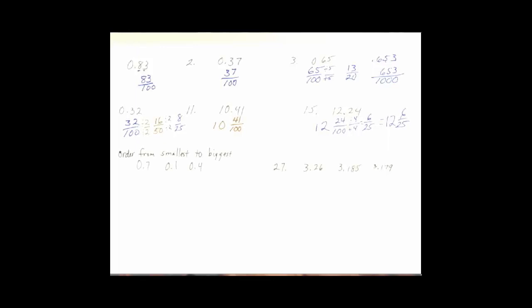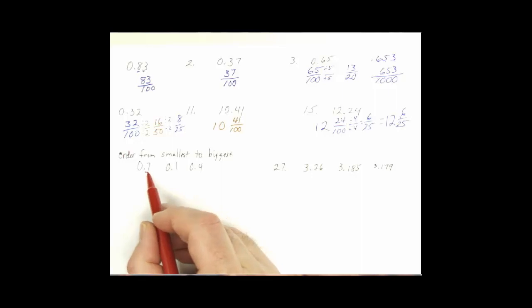Another skill they have us doing in that section is to order decimals from smallest to biggest. The first section on problem number 21, it's pretty straightforward. No tricks or weird stuff going on there. We have 7 tenths, 1 tenth,